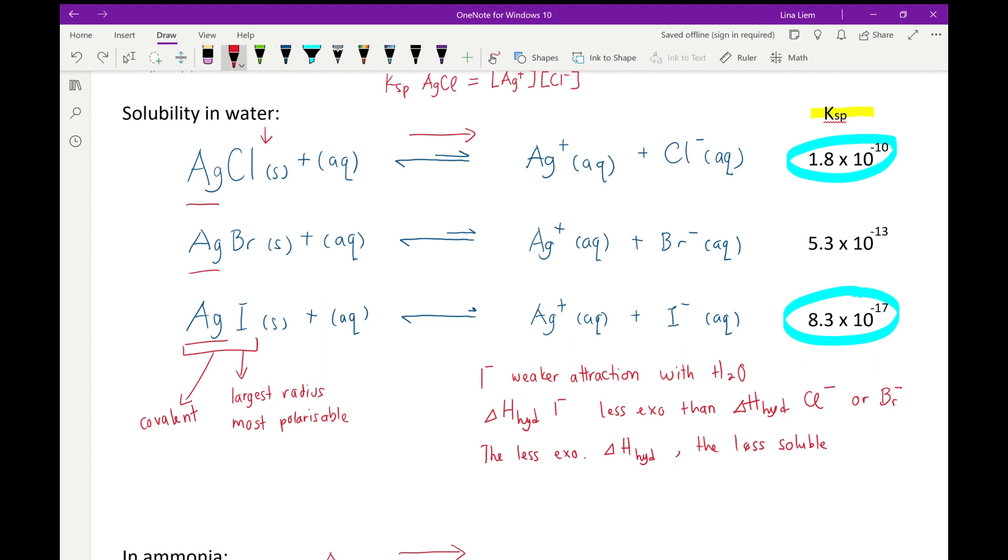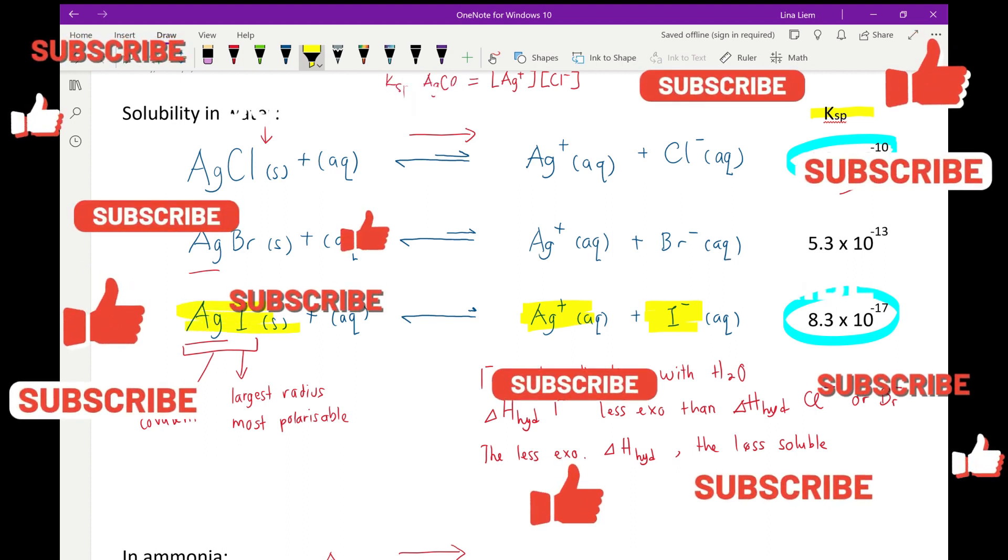These effects are more apparent in silver chloride than silver iodide, because silver chloride is much more soluble in water than silver iodide. With silver iodide, the concentration of the aqueous ion products are so small that there are no visible changes in terms of the amount of undissolved solid remaining. So it seems like silver iodide does not dissolve in ammonia. Thank you.